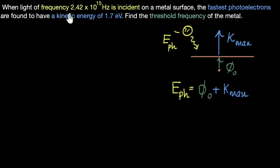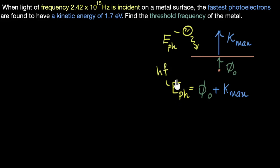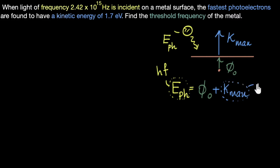Now I go back to the question and see what's given and what is asked. We are given the frequency of the incident light. From Planck's equation — energy of the photon equals H times F — if I know the frequency, I know the energy of the photon. We are also given that the fastest photoelectrons have a kinetic energy of 1.7 electron volts. Since this is the kinetic energy of the fastest electrons, this is K max.